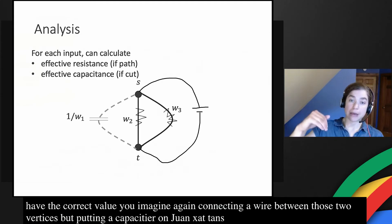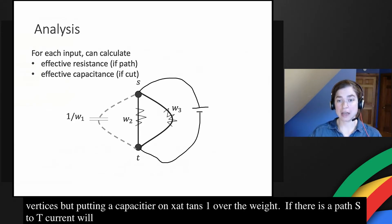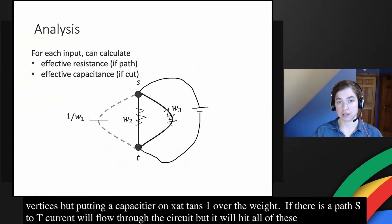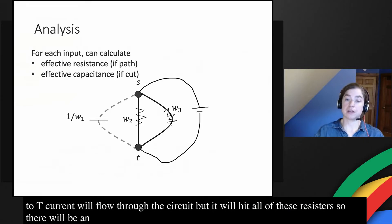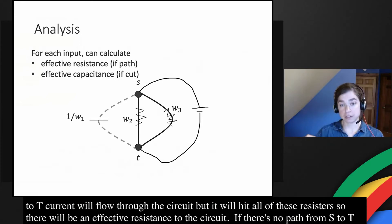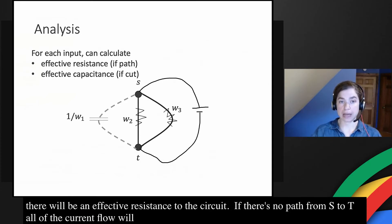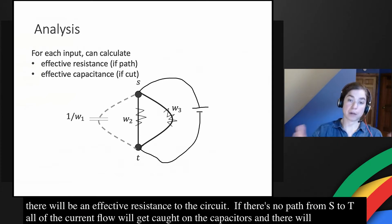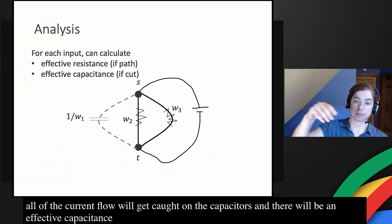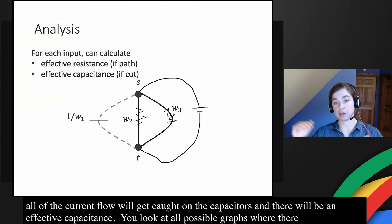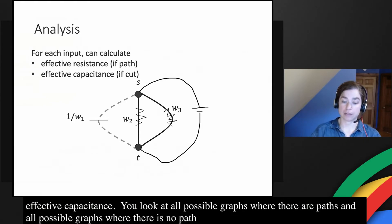Now if there is a path from s to t, current will flow through this circuit, but it will hit all of these resistors. And so there will be an effective resistance to the circuit. On the other hand, if there's no path from s to t, then all of the current flow will get caught on these capacitors, and there will be an effective capacitance. So what you do is you look at all possible graphs, all possible paths where there are paths, all possible graphs where there's no path, and you can calculate for each one of those the effective resistance or the effective capacitance.